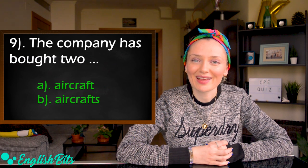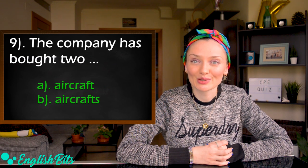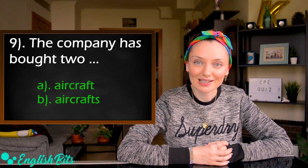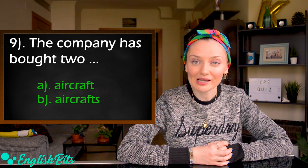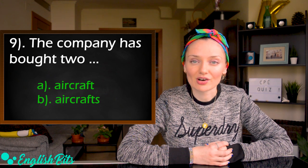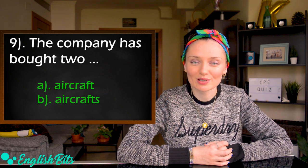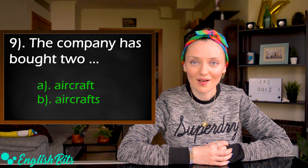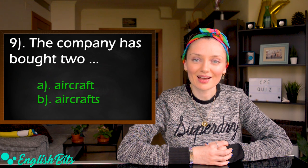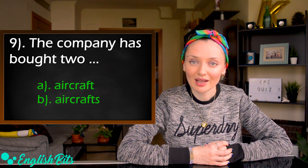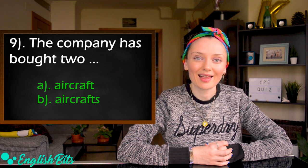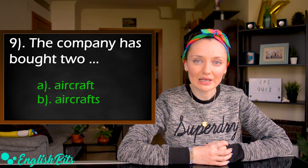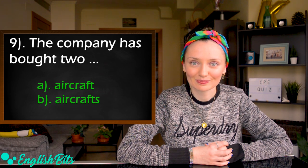Number nine: The company has bought two — A) aircraft, or B) aircrafts. Choose A or B.